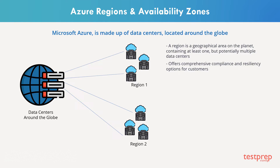Each Azure region is paired with another region within the same geography. This approach allows replication of resources. The replication of resources like virtual machines or storage is done across the geography, which helps reduce the likelihood of interruptions caused by events such as natural disasters, civil unrest, power outages, or physical network outages.